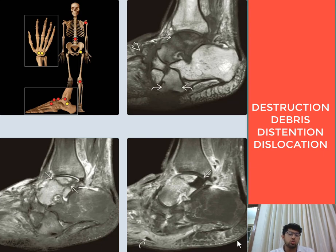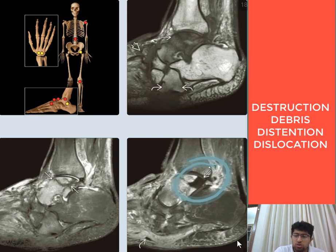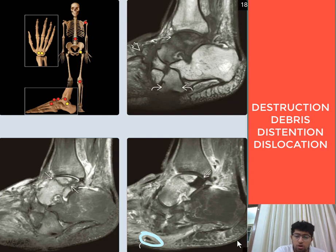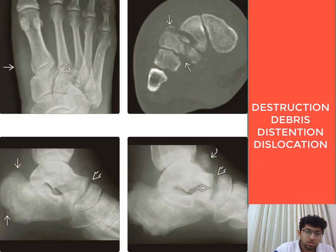The tarsal talus shows insufficiency fracture while the tarsal bones show osteonecrosis. On the contrast-enhanced image, there is no enhancement in a wedge-shaped area in the talus, confirming osteonecrosis along with the insufficiency fracture. A sinus formation is also visible on the contrast-enhanced image, confirming osteomyelitis in this patient.